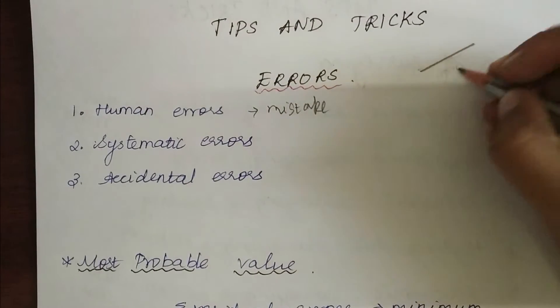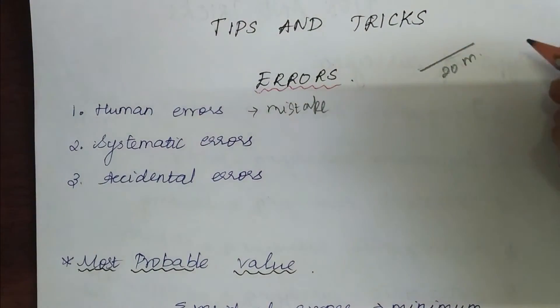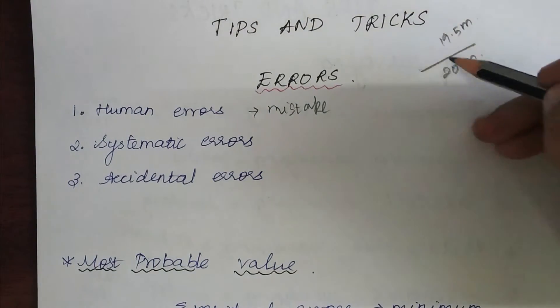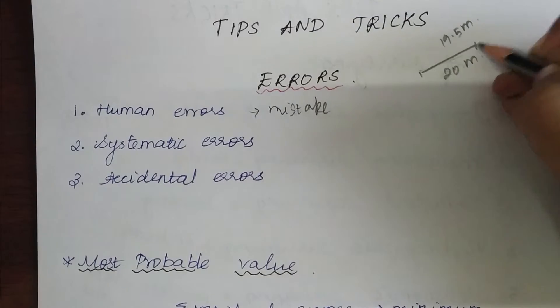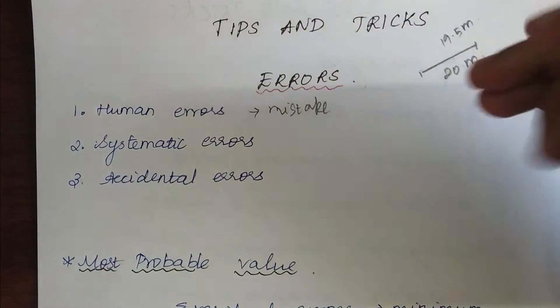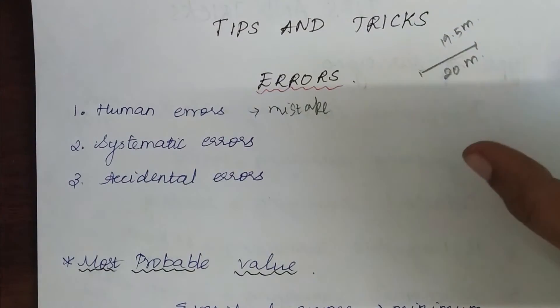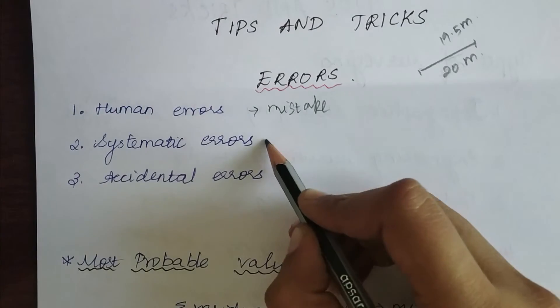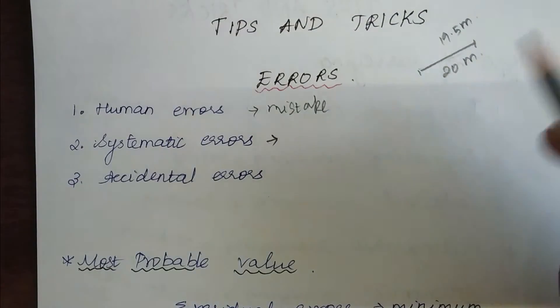A tape is said to be 20 meters long but in actual it is only 19.5 meters long. So every time a person uses this tape to measure something, he or she tends to make a mistake in the distance covered. This type of error is called systematic error.